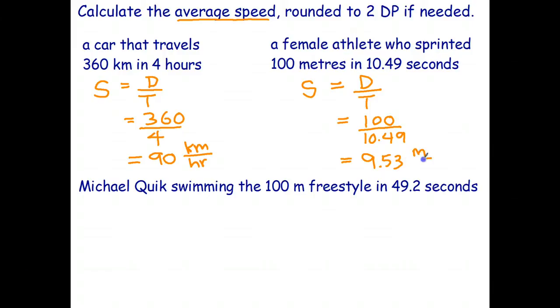Okay, that's her average speed. When she started off, she was going 0 meters per second, and probably at the end she was running faster than that. But on average, total distance over total time, 9.53 meters per second.